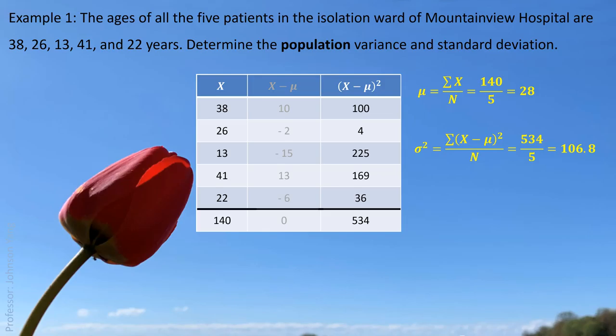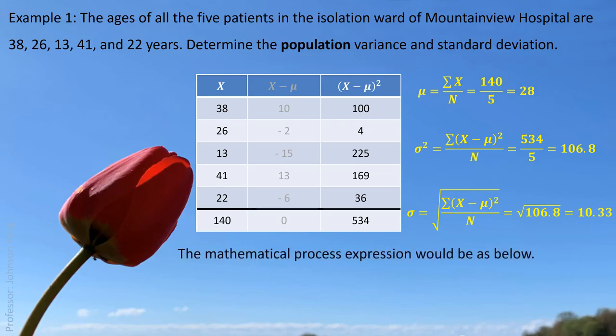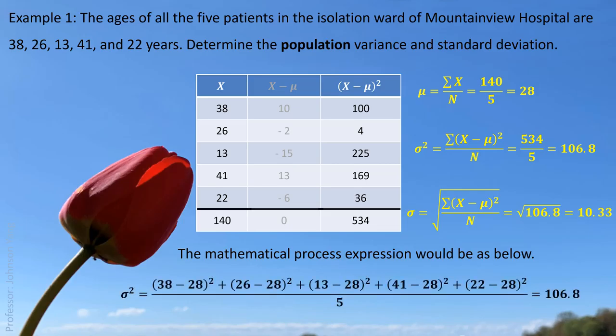At the bottom, we can see all the squared differences added together equal 534. Then we divide by the population size, 5, giving us 106.8 — that is the population variance. One more step: we take the square root, giving us 10.33 — that is the population standard deviation. So we have the center value 28 and the average distance 10.33.